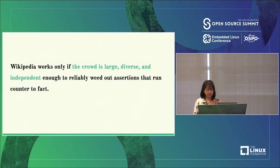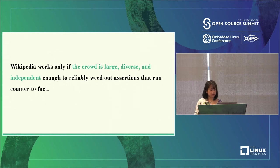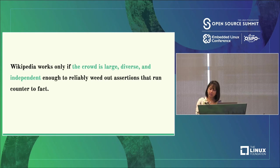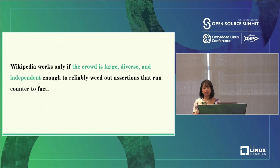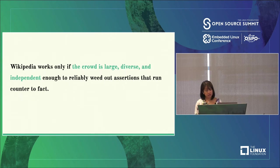I can summarize my investigation in one sentence: Wikipedia works only if the crowd is large, diverse, and independent enough to reliably weed out assertions that run counter to fact. English Wikipedia largely meets this criteria — its editor community is large, diverse, and mostly does well with rooting out misinformation. But as it turns out, many non-English versions of Wikipedia do not meet this criteria, so they don't really work.